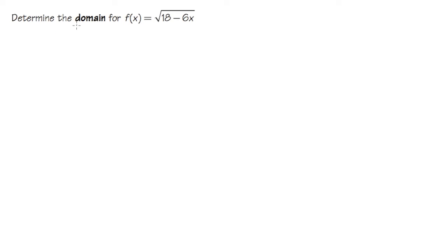In this question, we are going to find the domain for the function f(x) = √(18 - 6x). Domain means that we have to find the restriction on x. And inside of the square root, the restriction is that we cannot have any negative values inside.